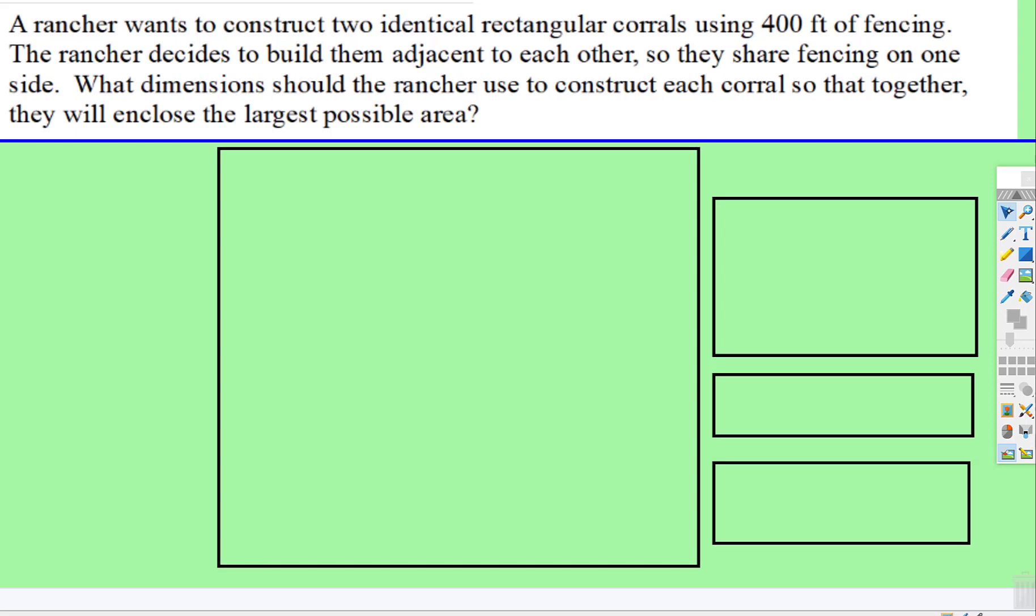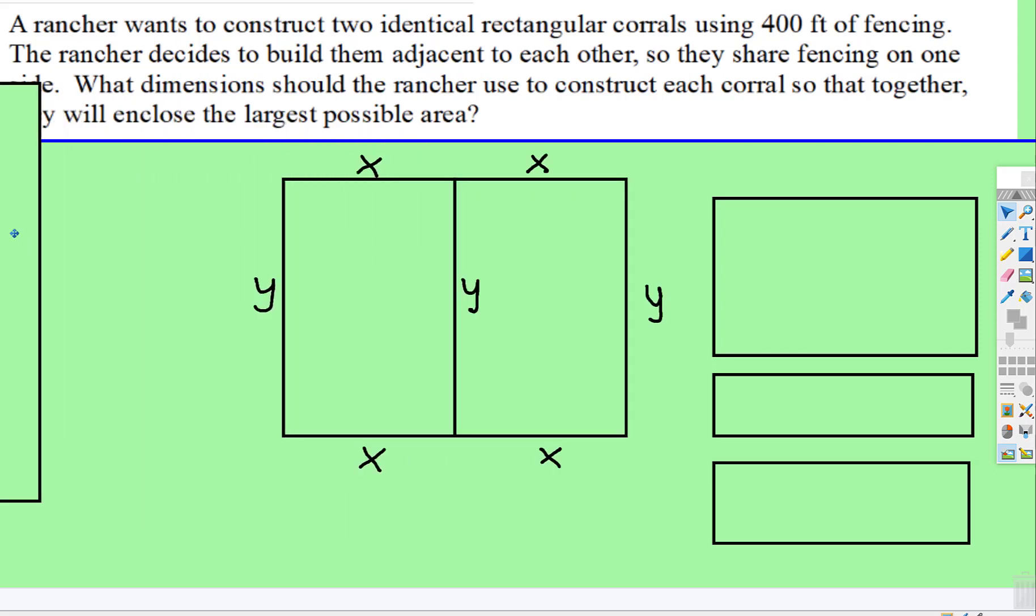Okay, so what do we have here? We have a rancher wants to construct two identical rectangular corrals using 400 feet of fencing. So the rancher decides to build them adjacent to each other because if they're adjacent to each other, then they share one side, which means that requires less fencing than if they're apart from each other. So they share fencing on one side. What dimension should the ranchers use? So let's draw a diagram of the two corrals.